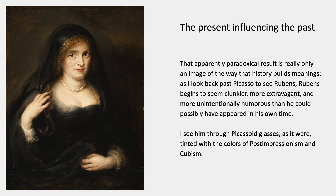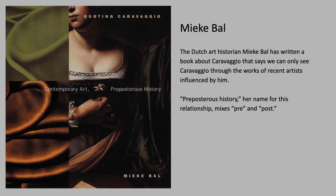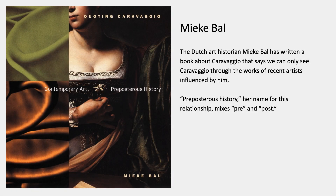If you start with Picasso and then go back to paintings like this — Rubens is one of the artists that Picasso studied — then you see Rubens in a completely different light. It's not really a historical light; it's a kind of paradoxical light because it looks like Picasso is influencing Rubens. He is influencing the way you're thinking about Rubens. So I see Rubens through Picasso-ed glasses, tinted with my knowledge of Post-Impressionism and Cubism. The Dutch art historian Mika Ball has written a book about Caravaggio that makes this kind of claim. She says we can only understand Caravaggio through the works of recent artists who were influenced by him, and she calls this pre-posterous history — a little pun on pre and post, mixing up pre and post.